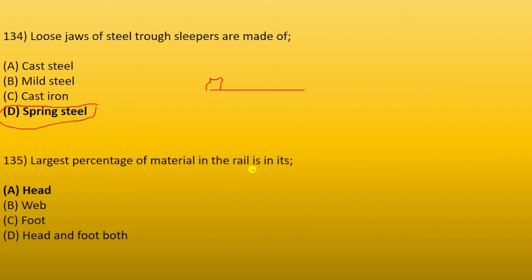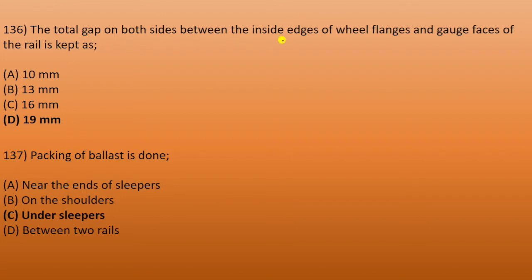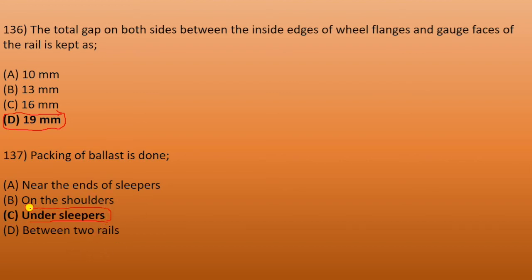The larger percentage of material in the rail is in its head — not the web, foot, or head-and-foot combined. There is a lot of steel in the rail head. Next: the total gap on both sides between the inside edges of wheel flanges and the gauge faces of the rail is kept as 19 mm. Next: the packing of ballast is done under sleepers, not on the shoulders or near the ends of sleepers.